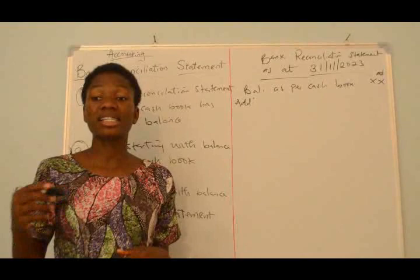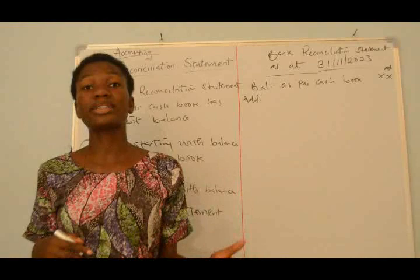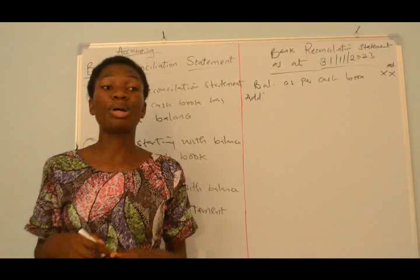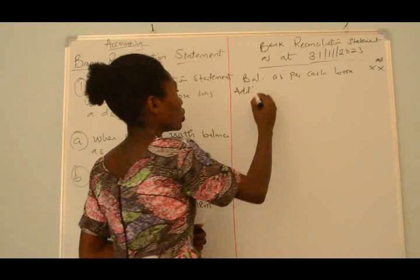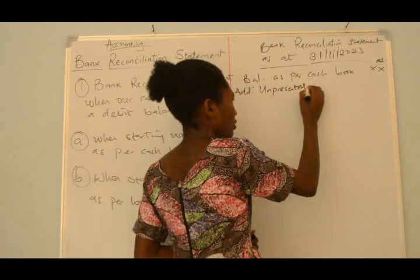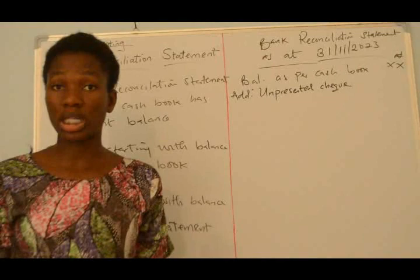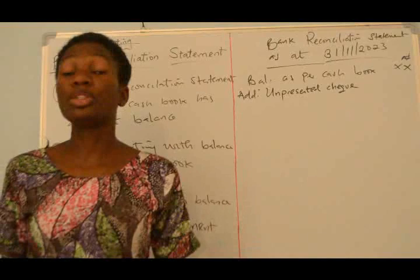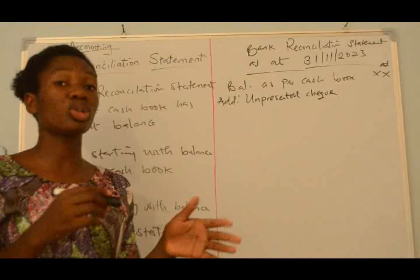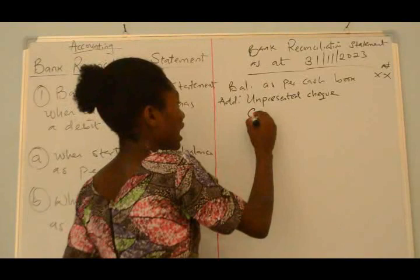Like our un-presented check — un-presented means we gave a check out, we issued a check out, but that person failed to collect it from the Bank. So at the end of the month the Bank does not have that, and to balance the account we have to add the un-presented check back to our Cashbook balance. Also, there are some money that people transfer to the business — maybe to pay for something — but the business was not aware, like our credit transfers. The Bank already entered it, so you also add it, debiting that to our Cashbook balance.